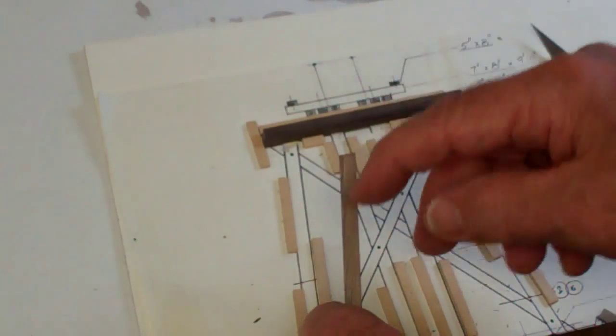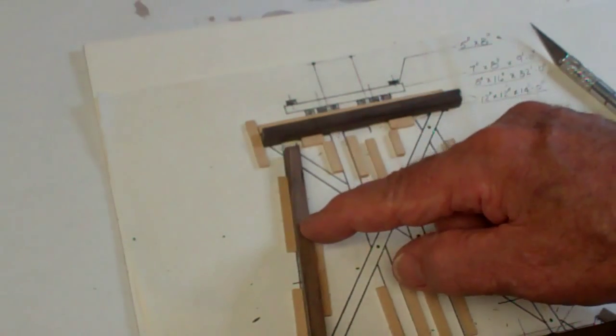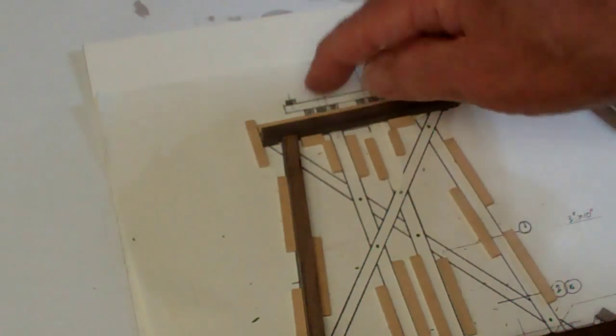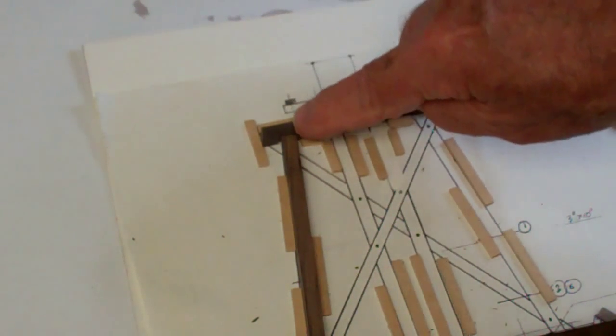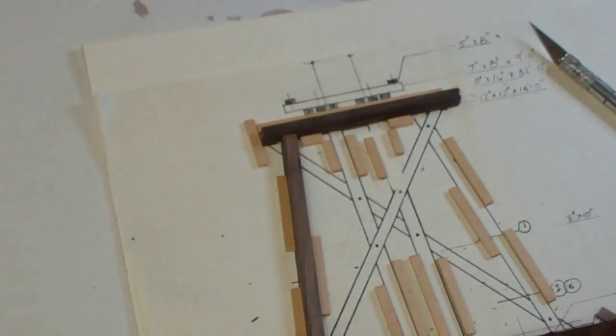Now putting some adhesive on here with the leg cut to length, you just press it up there, and that is an absolutely tight, perfect fit on that joint.